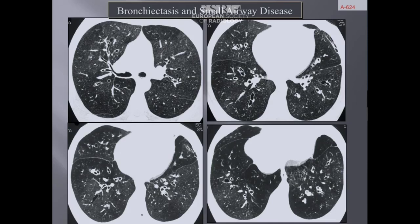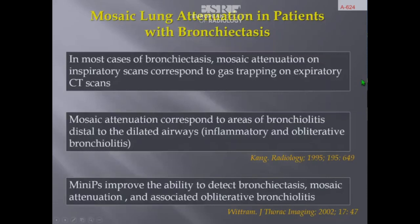This hypoperfusion is related to reflex vasoconstriction in areas of hypoventilation due to obstruction of small airways. In most cases of bronchiectasis, mosaic attenuation on inspiratory scans corresponds to gas trapping on expiratory CT scans. Mosaic attenuation corresponds to areas of bronchiolitis distal to dilated airways, and this obstruction could be inflammatory but most often obliterative. MinIP improves the ability to detect bronchiectasis, mosaic attenuation, and associated obliterative bronchiolitis.